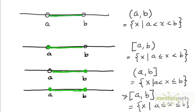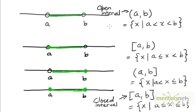By convention, this is known as a closed interval because it includes both the endpoints, and this is called an open interval from A to B because it excludes both the endpoints. This is called a left closed right open interval, and this is called a left open, right closed interval. But regardless of whether the interval is open, closed, left open right closed, or left closed right open, the length of the interval is given by the difference B minus A. So the length of all four of these intervals is B minus A.